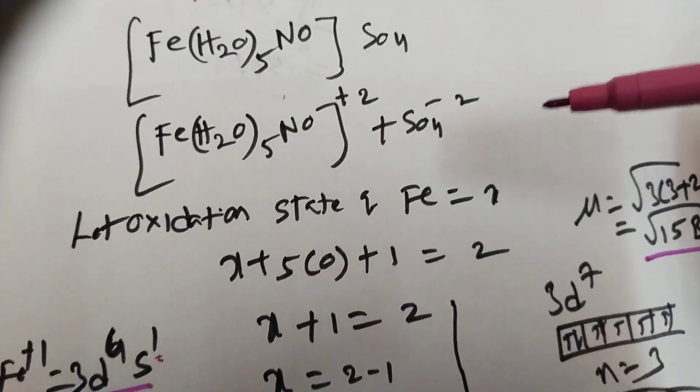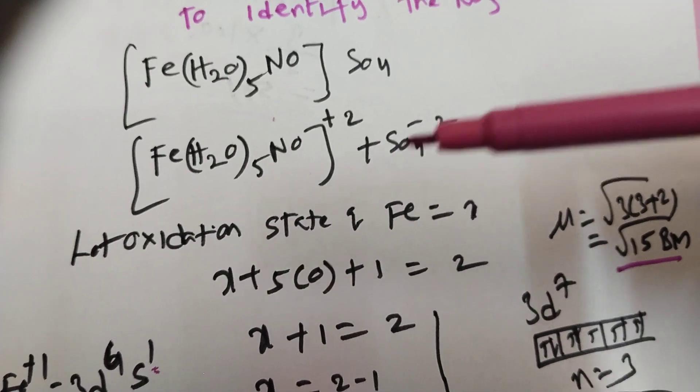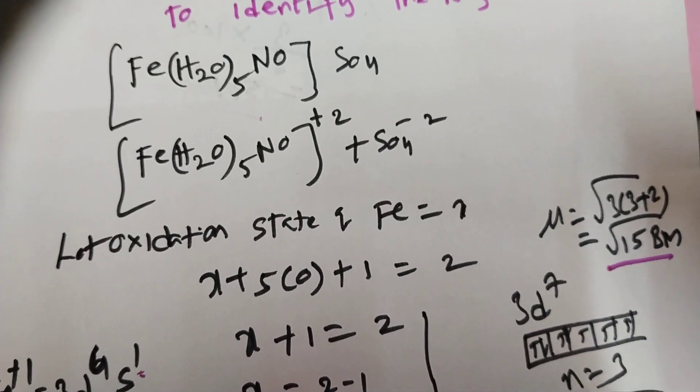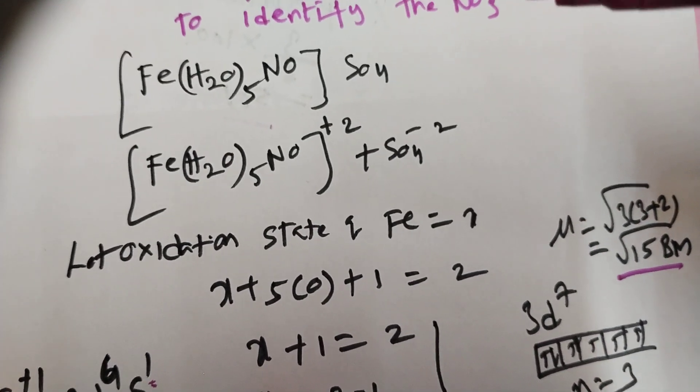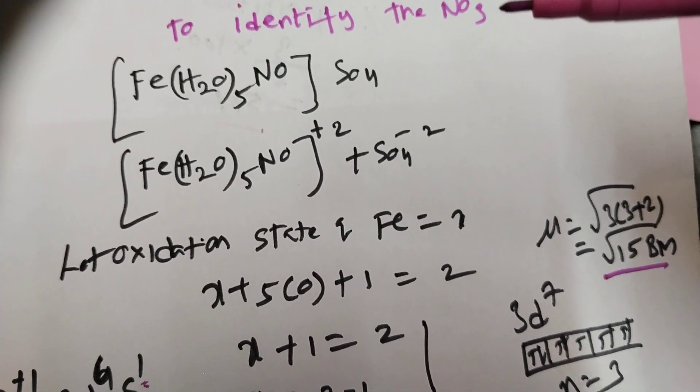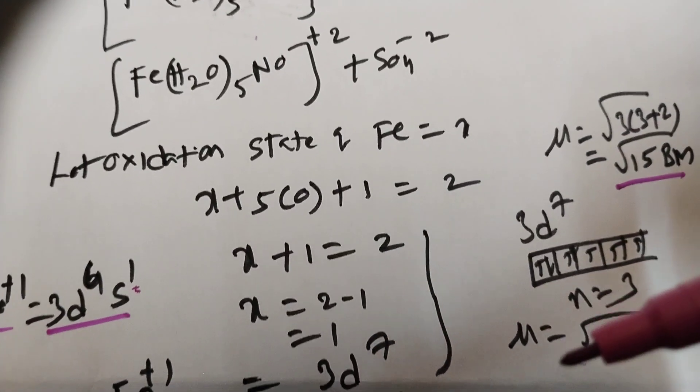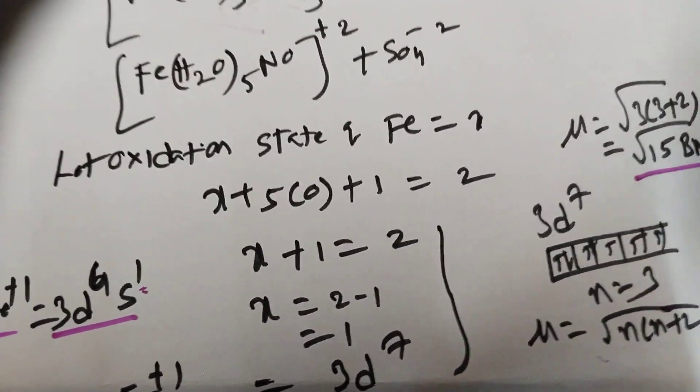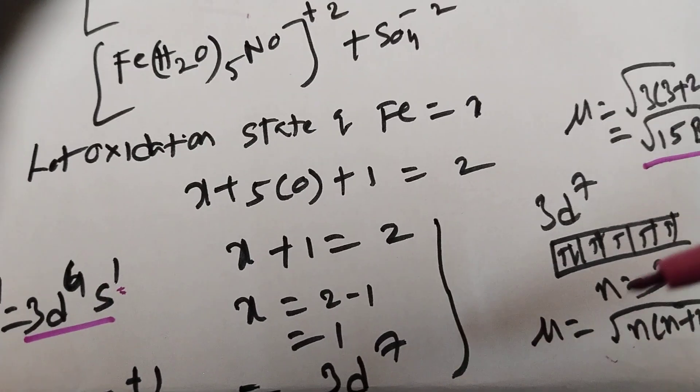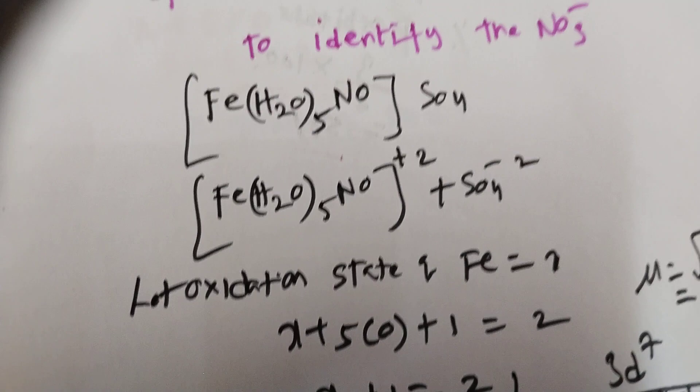SP3D2 hybridization, 4s orbital, 4p orbital, 4d orbitals. If you see very carefully, s1 orbital, 3p orbital, d2 orbitals. SP3D2. At the same time, they may ask another question: how many unpaired electrons are there in brown ring complex? 3 unpaired electrons are there.